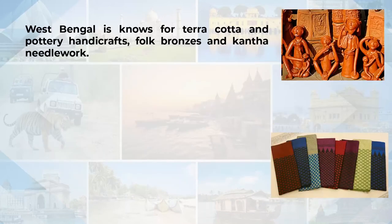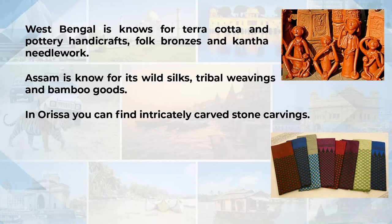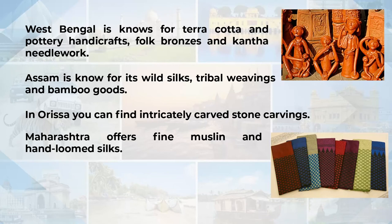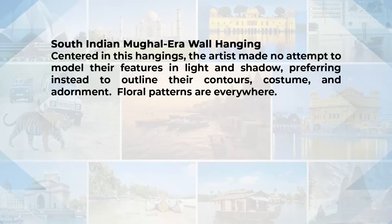West Bengal is very popular for terracotta, pottery handicrafts and Kantha needlework. Assam is known for wild silks, tribal weavings and bamboo goods. In Odisha one can find intricately carved stone carvings. Maharashtra offers fine muslin and handwoven silks. Gujarat produces handsome handwoven tie-dyed silks and textiles, and patchwork and glass wall hangings.